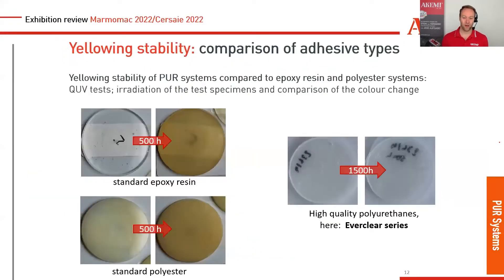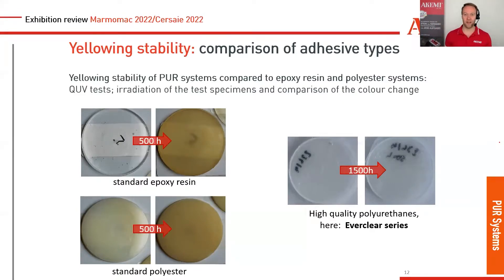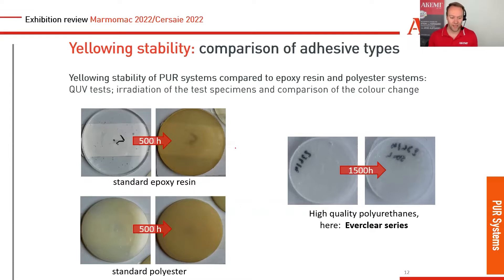The first products I want to show you require a little excursion into the different types of adhesives, especially when we talk about stability for UV radiation — so whether the glue turns yellow or not. When you know the bonding and construction adhesives on the market, they are formulated out of different chemical bases like polyester, epoxy, epoxy acrylate, polyurethane, and so on. All of them have great properties, but some also have disadvantages.